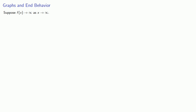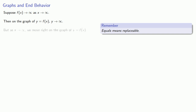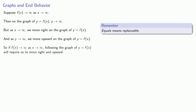Suppose f of x goes to infinity as x goes to infinity. On the graph of y equals f of x — remember, equals means replaceable — y goes to infinity. As x goes to infinity, we move right on the graph, and as y goes to infinity, we move upward. So if f of x goes to infinity as x goes to infinity, following the graph of y equals f of x requires us to move right and upward.